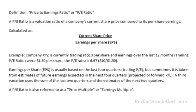Finally, the PE ratio is sometimes referred to as a multiple because it shows how much investors are willing to pay per dollar of earnings. If a company were trading at a multiple or PE of 20, the interpretation is that an investor is willing to pay $20 for a single dollar of earnings. Another way to think of it is in terms of time: if an investor buys a stock with a PE ratio of 20, it will take 20 years before the earnings equal the amount invested.